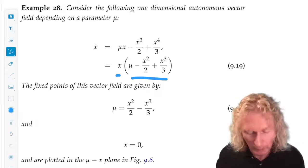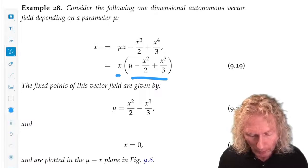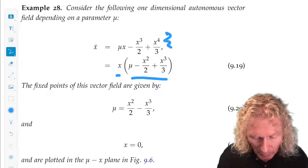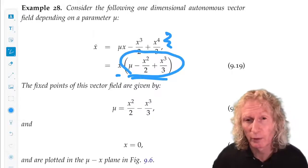So the equilibria have the same curve as in the previous example, plus x equals zero.